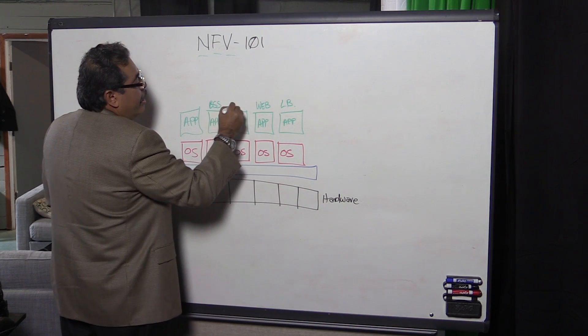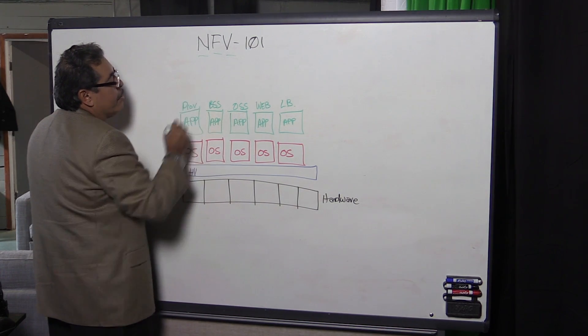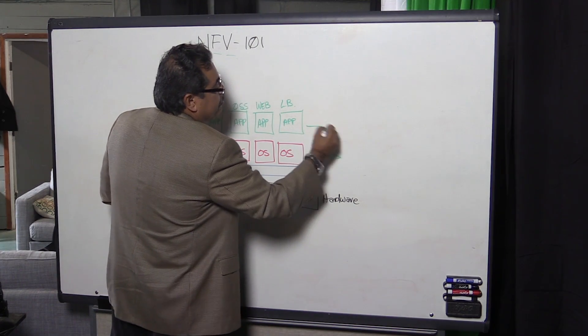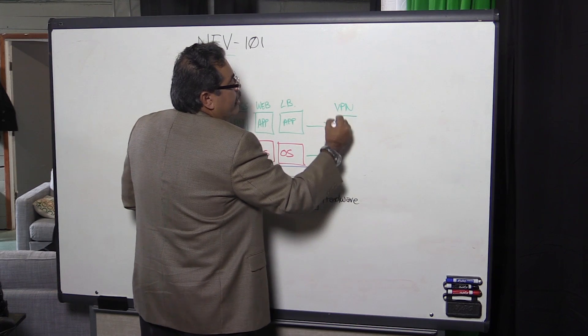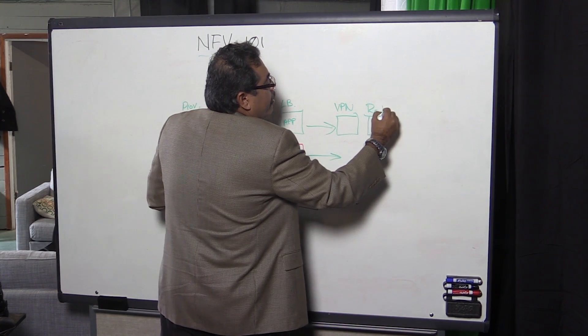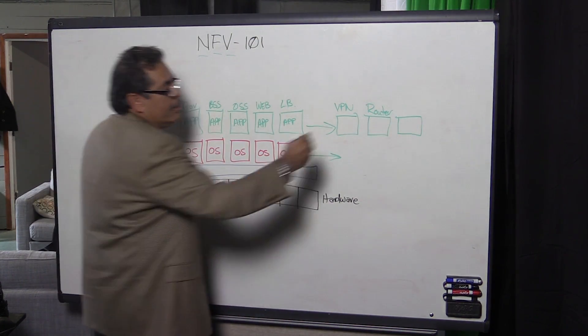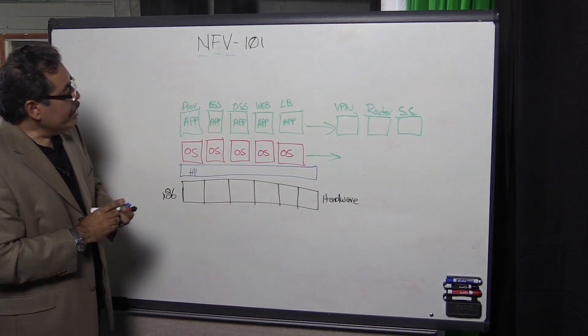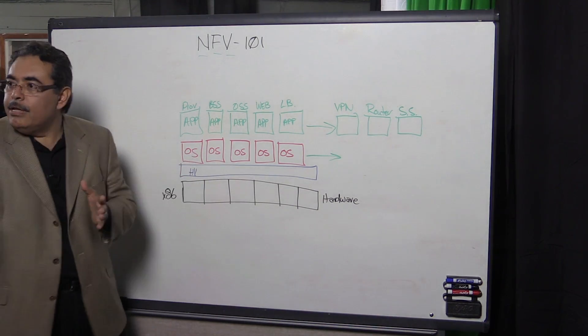So you could have your BSS and your OSS. And then you could have your provisioning system here as well. Now it is now getting to the point if we keep extending this out that we are now having VPN applications and we have router applications. And we have anything that's part of the network. Literally soft switches. So we have soft switches. Everything that used to be a box. Everything that used to be provided by an independent vendor.